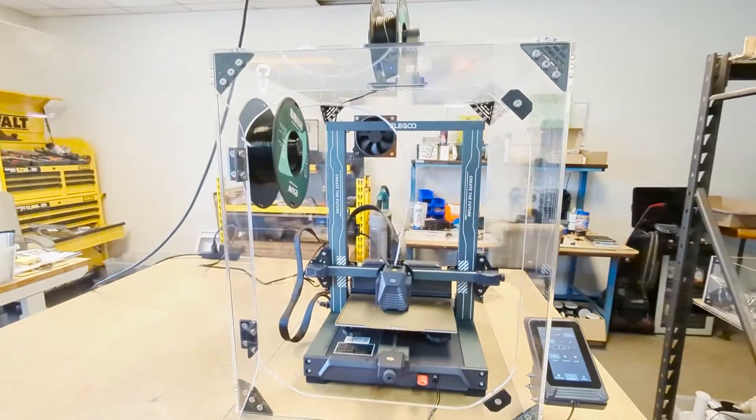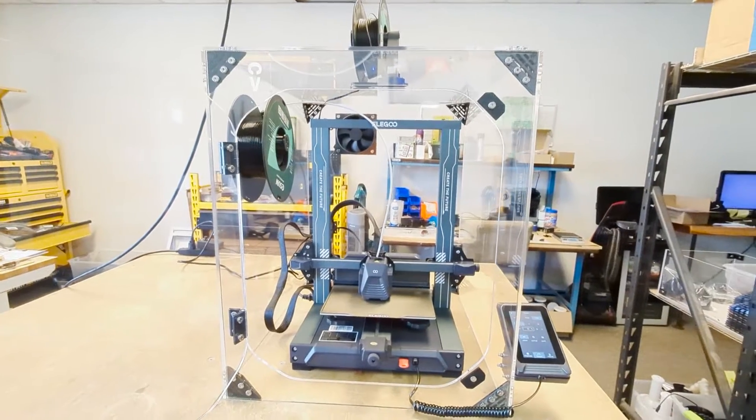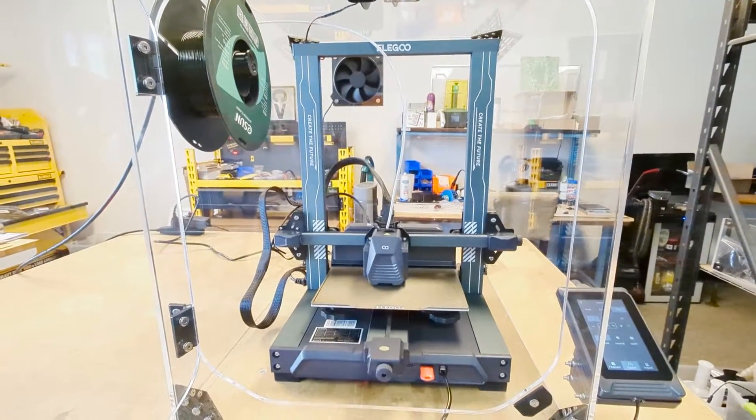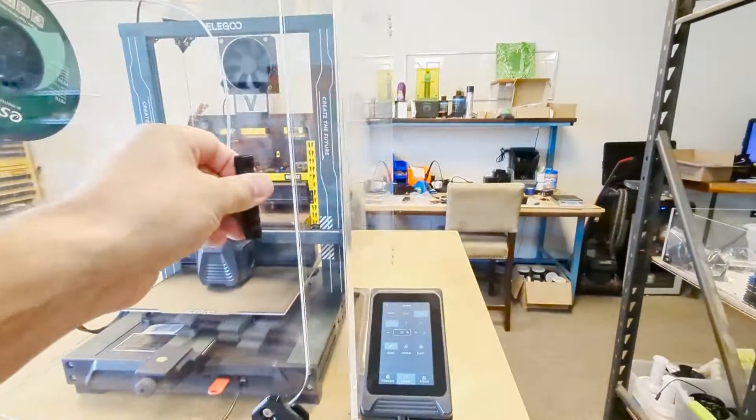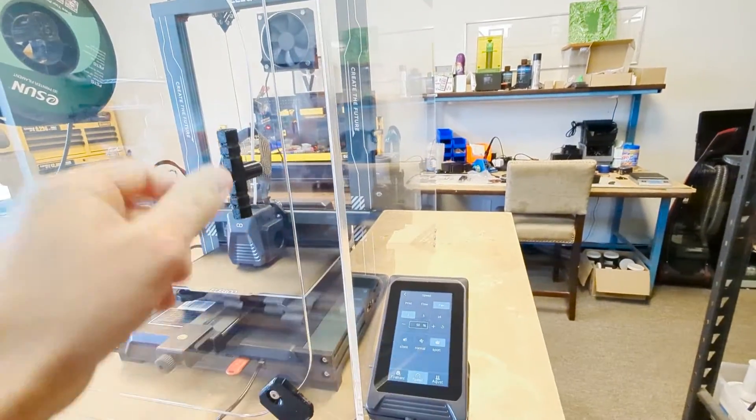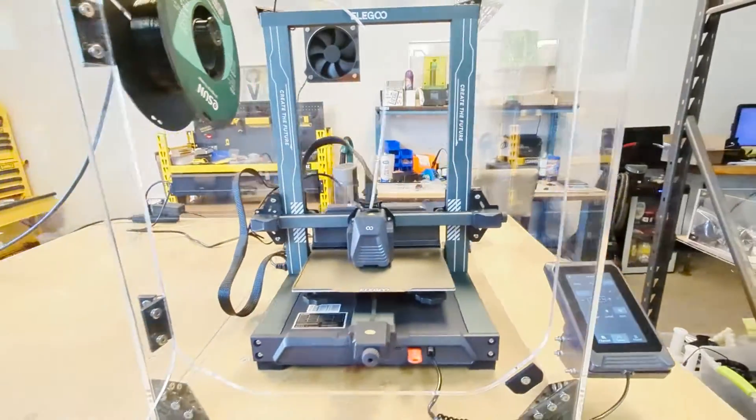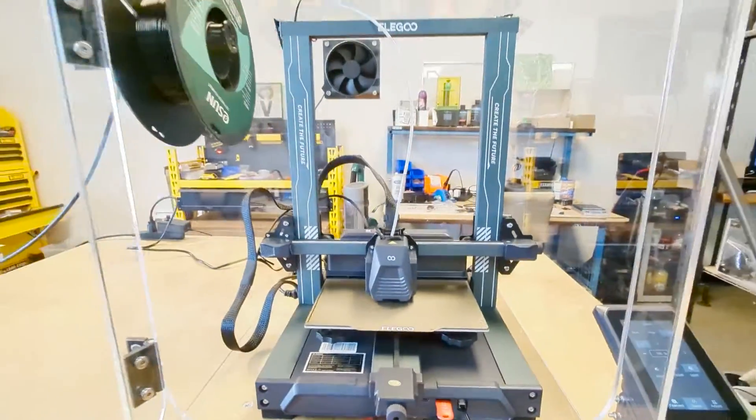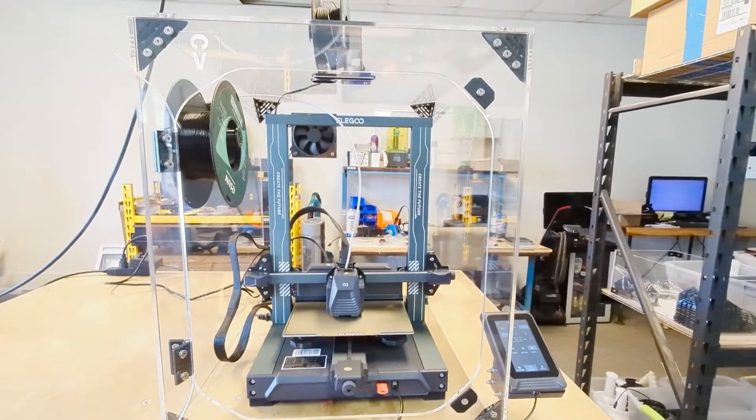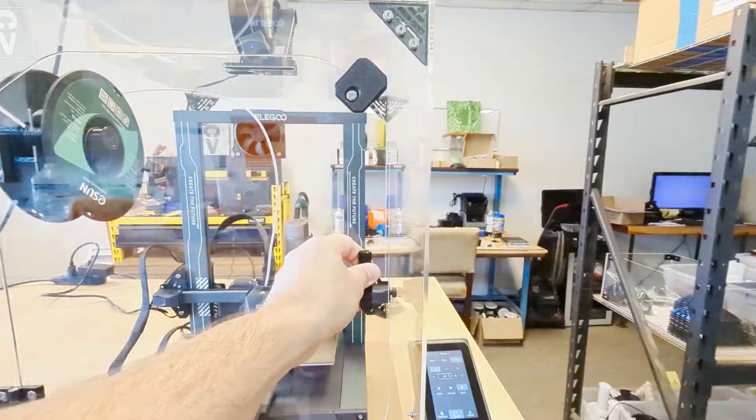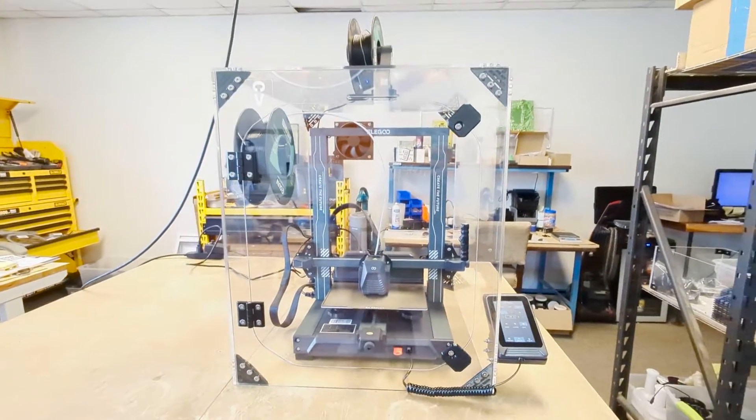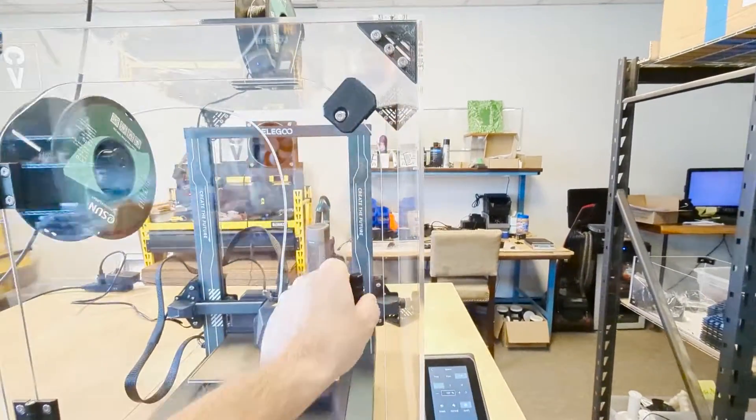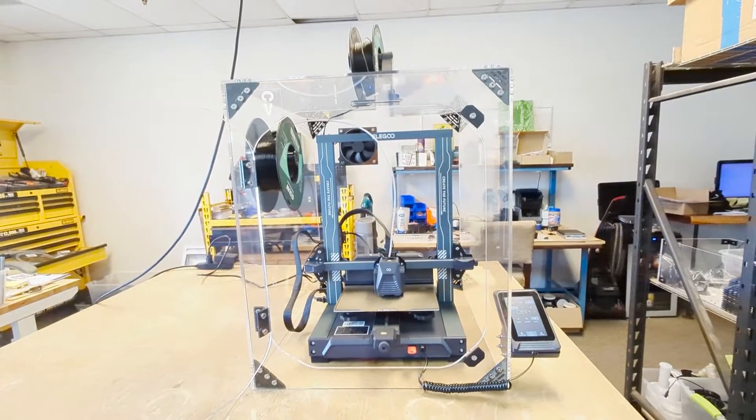But if I even open up the enclosure here, you can really hear those things. They've got some sound to them. Now, if I bump it up to like sport, that's at 100%. Yeah, those things cook and they've got some noise to them. And so you can really tell that having this enclosure definitely helps out with that sound.